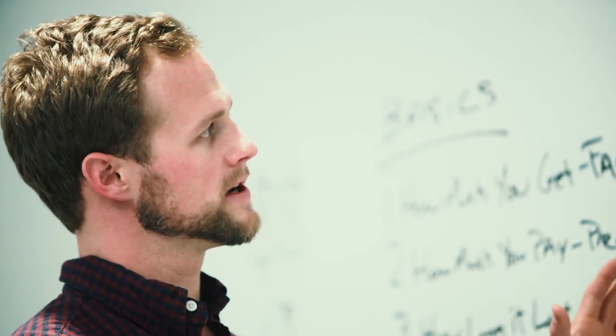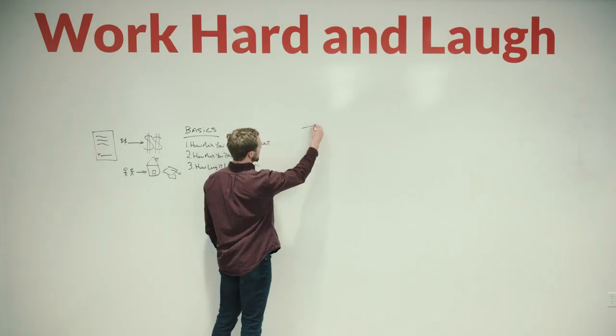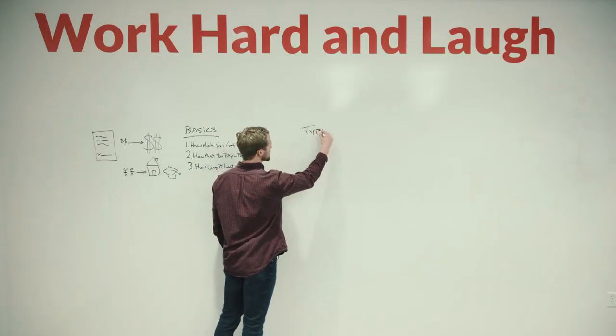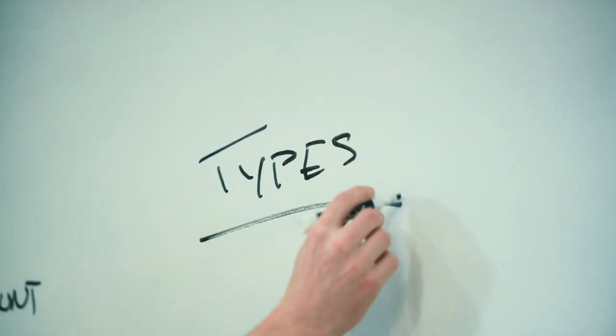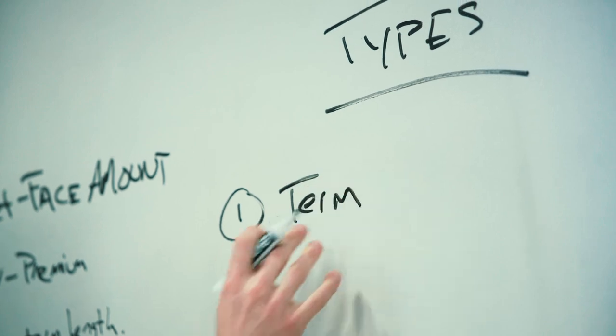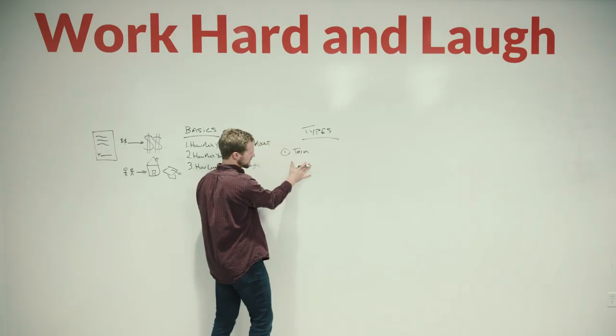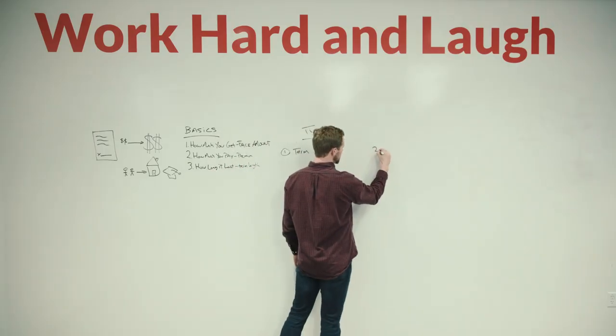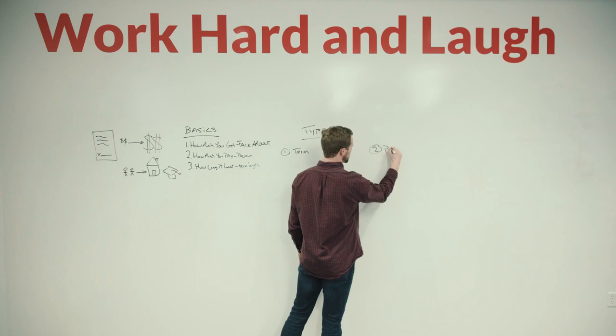With that in mind, it's also important to know there are two types. And they have similarities, but also some pretty important differences to note. The first type is term. Term is really simple, so we'll attack that first. The second type is called permanent.